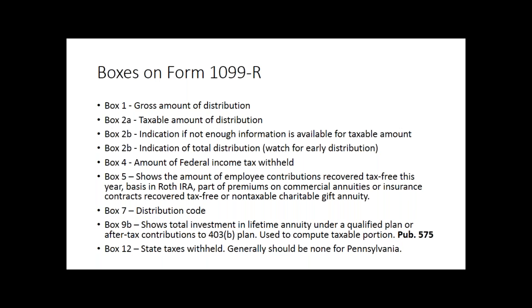We also want to look at box 2B in the context of early distributions. We may see an indication of a complete withdrawal of the account, meaning someone has taken all their money out. If they're under 59½, we could be looking at an early distribution, which would also indicate we'll have some penalties. So we want to watch those boxes on 2B: one would be whether or not we can determine how much is taxable, the other being a total withdrawal. If you see a total withdrawal, we expect to see a couple of different codes — maybe someone's rolling the account, or terminating early with an early withdrawal indication.